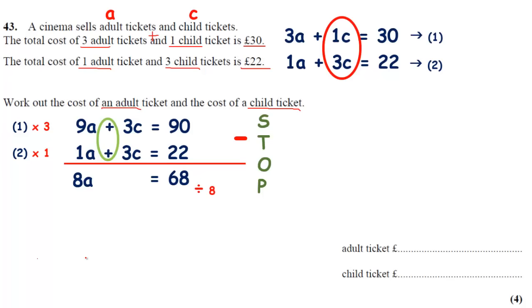So at this stage I need to do this division, 68 divided by 8. Many of you would go to the bus stop method. 8 goes into 68 how many times? It doesn't go exactly, it goes 8 times, 8 whole times. 8 times 8 is 64, and the remainder is 4.